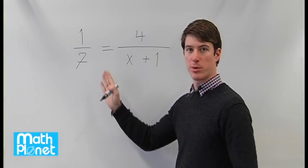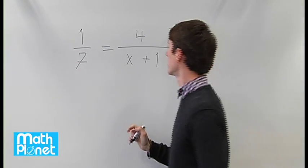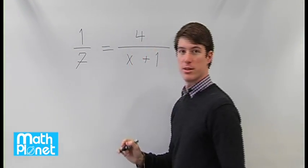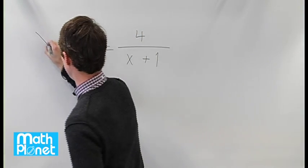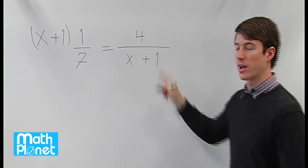We want to multiply both sides by the other's denominator, just like we would with any rational expression. So we can multiply this side by x+1 and this side by 7.